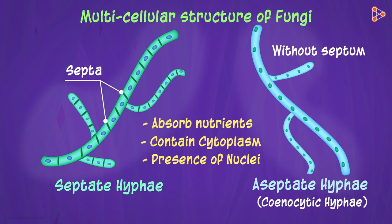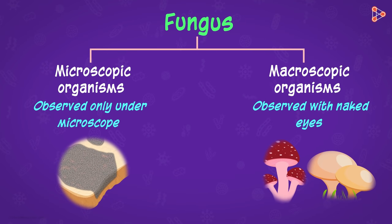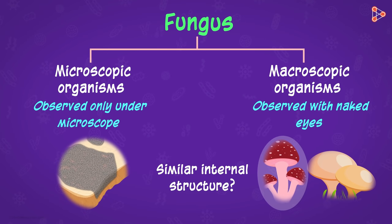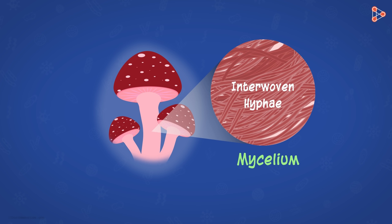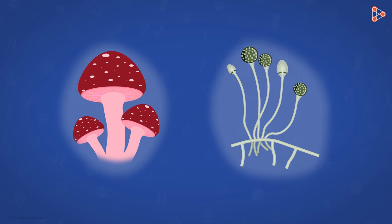This was the multicellular structure of fungi as observed under the microscope. But will the huge macroscopic structures we see in case of mushrooms have a similar internal structure or something different? Well, astonishingly, these also have a similar internal structure. So the body of the mushroom will also be made up of mycelium, and similar to the microscopic ones, even this mycelium will be made up of interwoven hyphae. We may find slight modifications in different types of fungi, but the basic structure remains the same.